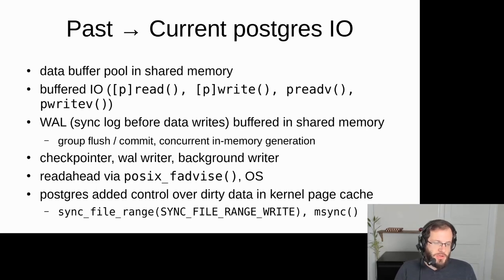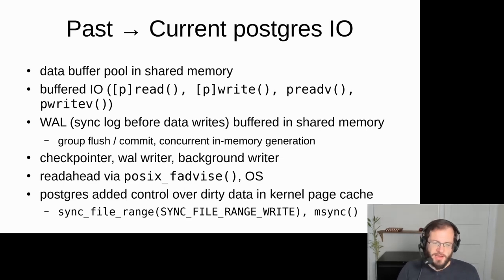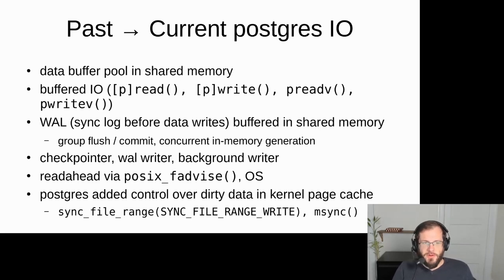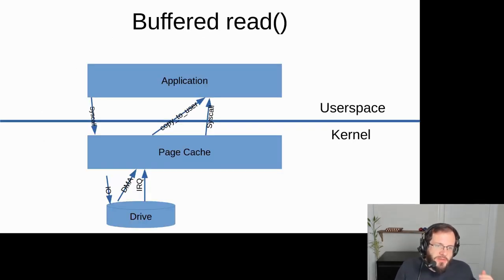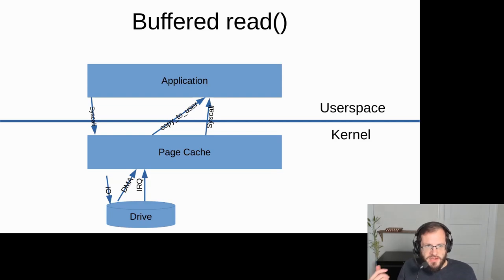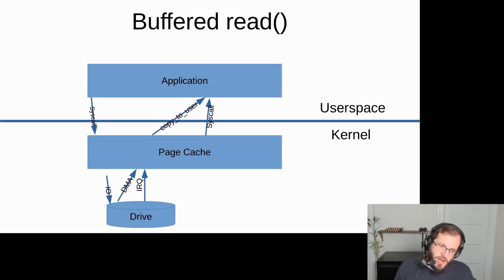There's a buffer pool in shared memory, and all data accesses go through the buffer pool. The buffer pool is filled by buffered IO using p-read, p-write, or whatever the system calls are for the platform. With buffered IO, the application — in this case Postgres — will do a system call, but it will not directly do IO to the drive. It will first go to the kernel page cache. The page cache in the kernel might already have the data, but if not, the page cache will ask the drive for the data.